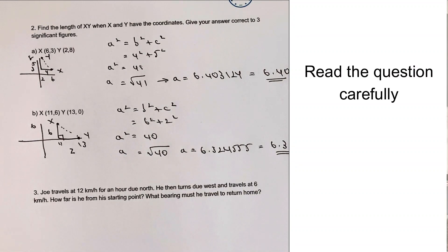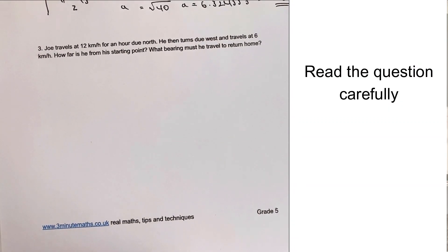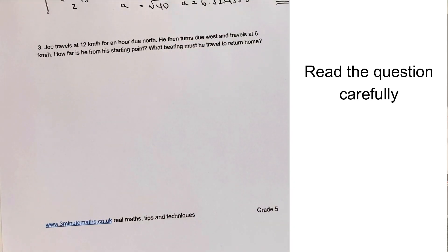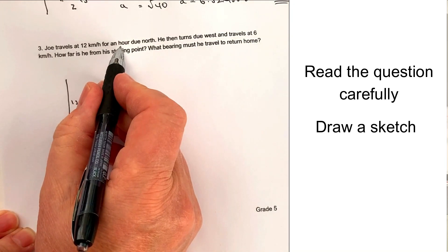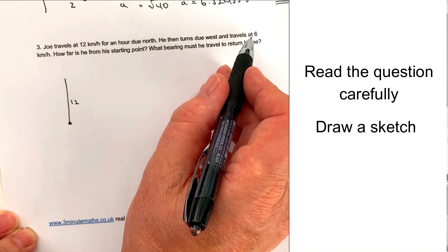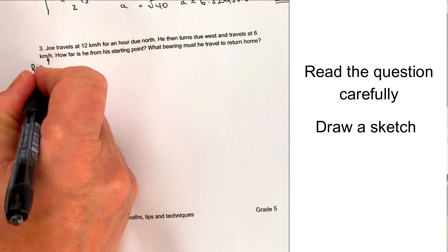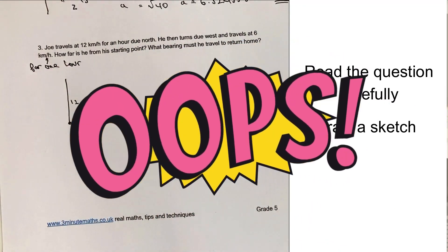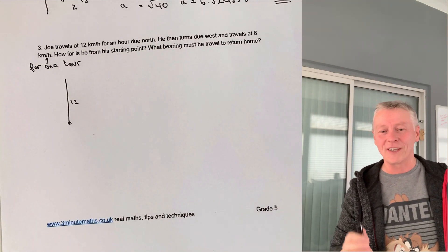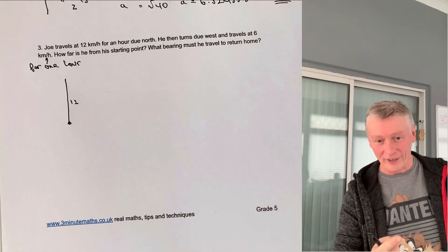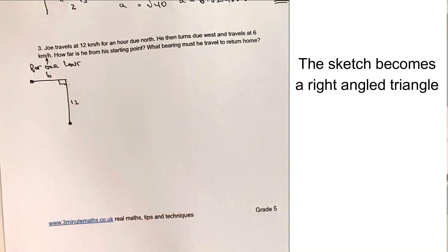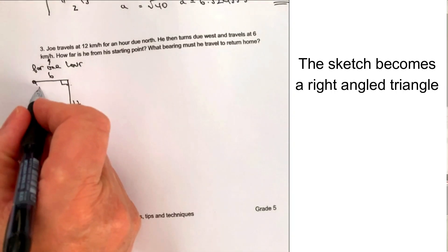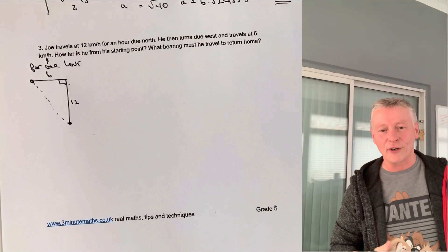Moving on to question number three — please stop the video and have a go. This one requires a sketch. Joe travels at 12 kilometres per hour due north for one hour, then turns west and travels at 6 kilometres per hour for one hour. So on the sketch, he goes north 12 km, then due west 6 km, forming a right-angled triangle. The first question is: how far is he from the starting point? We can use Pythagoras to calculate that.